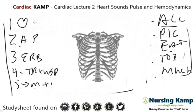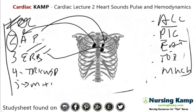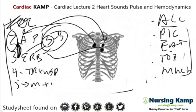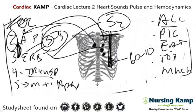The second intercostal space is aortic, and next to it is pulmonic. Erb's point at the third intercostal space is the best place to hear S2. The fourth intercostal space is tricuspid, and the fifth intercostal space at the midclavicular line is the mitral valve — also called the apex. That's where we listen to the apical heart rate, which should be anywhere from 60 to 100. These are the locations for normal heart sounds S1 and S2.